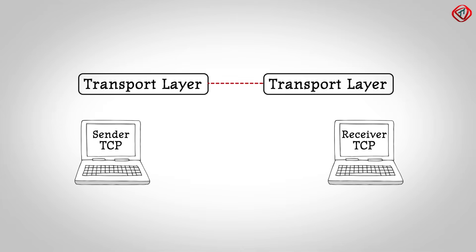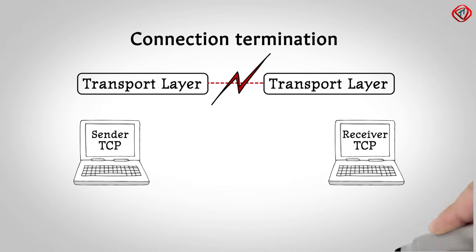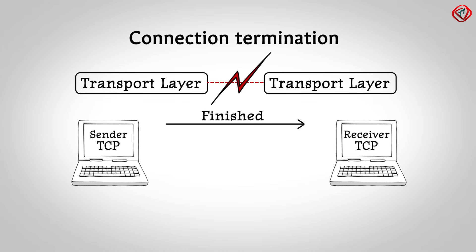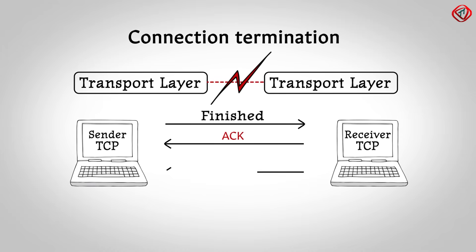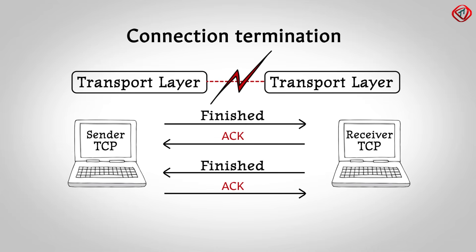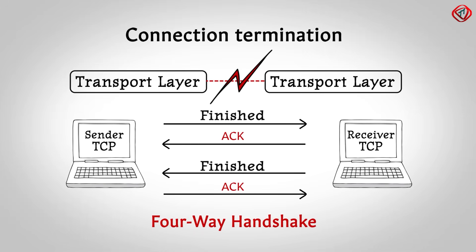The last phase in data transmission is connection termination. When an endpoint wishes to stop its connection, it sends a finished message to the other endpoint. The other endpoint acknowledges the message. Both ends do this two-phase handshake process. Therefore, the connection termination follows a four-way handshake process. So this is the way TCP handles data transfer.